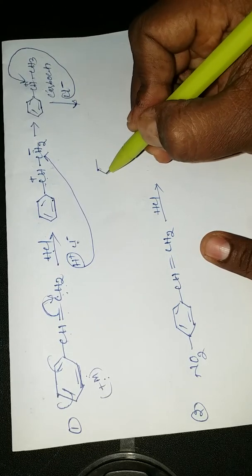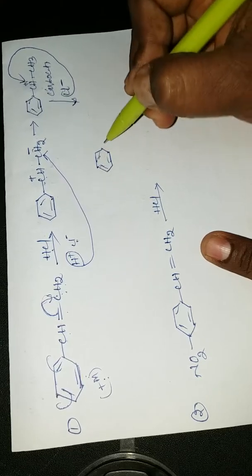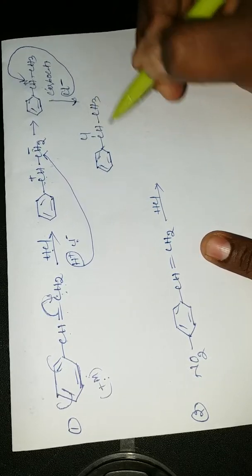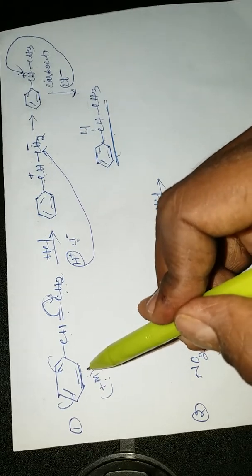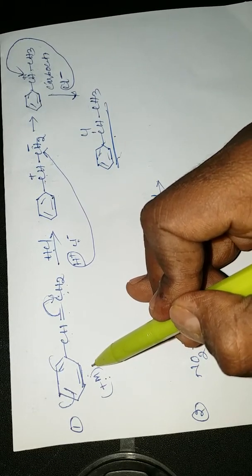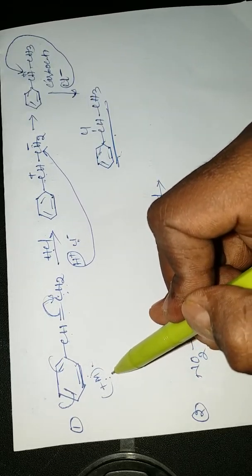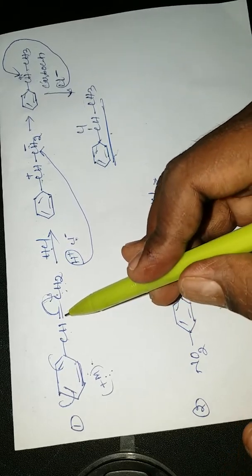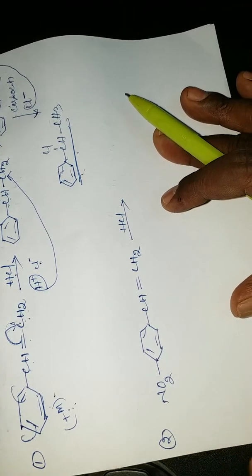Then Cl⁻ attacks the positive position (the carbocation). Cl⁻ attacks the positive side. So the final product we get is benzene-CHCl-CH₃. This is the final product of the electrophilic addition reaction.